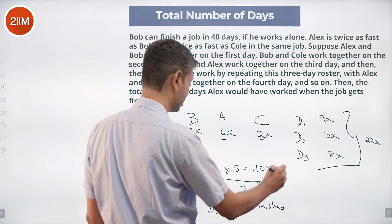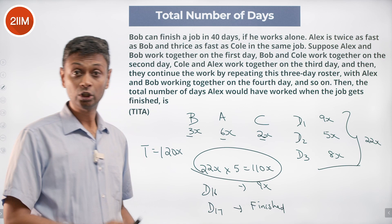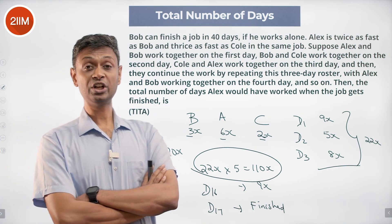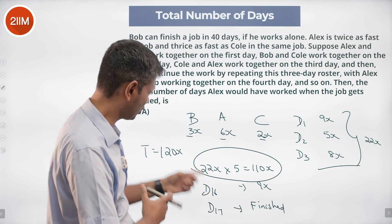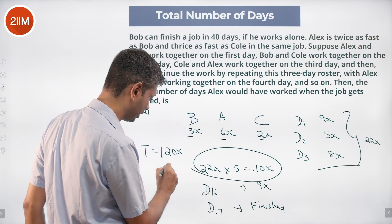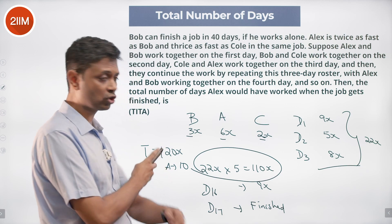So Alex has worked 5 days, no not 5 days, 10 days. In the full cycles, 5 full cycles in each cycle he works 2 days. A and B, B and C, C and A completely. So in this 5 cycles, Alex has worked 10 days, Bob has worked 10 days, Cole has worked 10 days.